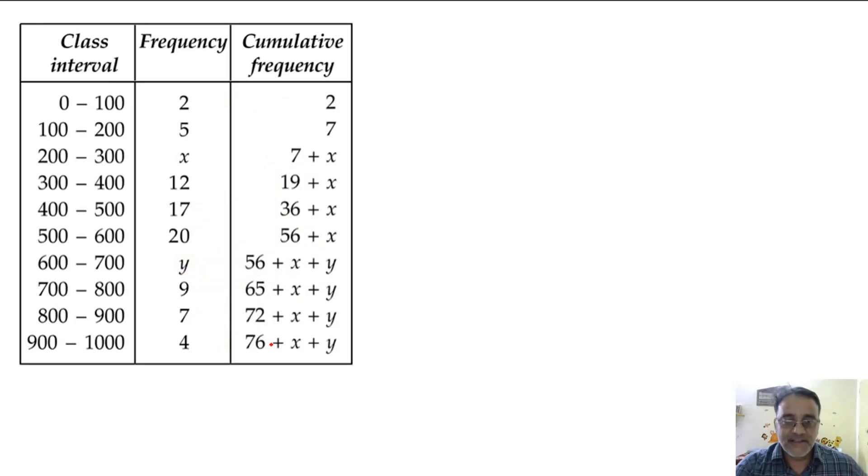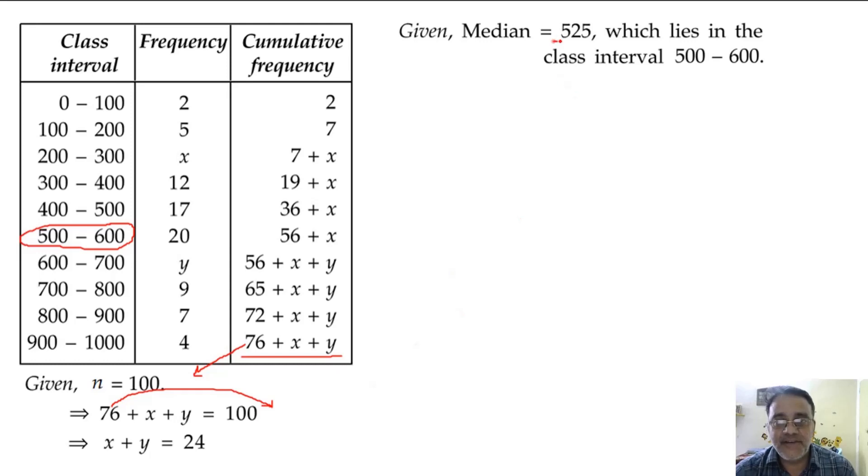So now the median class is this one. Now this method is a different way because we had all added in the previous method. This is the total frequency, 76 plus x plus y. So given that n is equal to 100, so 76 plus x plus y is equal to 100. So what is the value of x plus y? 100 minus 76, that is 24. Now the median is given 525, which lies in the class interval 500 to 600. So therefore the median class is 500 to 600. So L is 500, this is f, 20, and the cumulative frequency of the class preceding the modal class, that is 36 plus x, and the total frequency is 100.